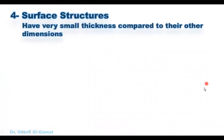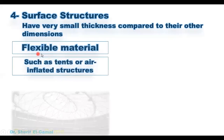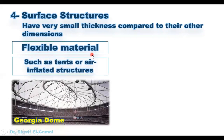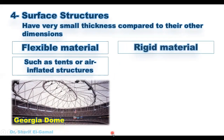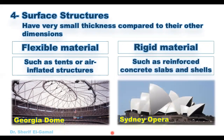The last type of structures are surface structures. They have very small thickness compared to their other dimensions, and could be made from flexible materials such as tents or air-inflated structures, or fabricated from rigid materials such as reinforced concrete slabs and sheds.